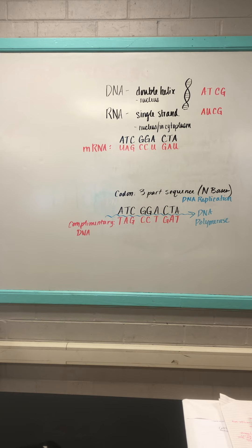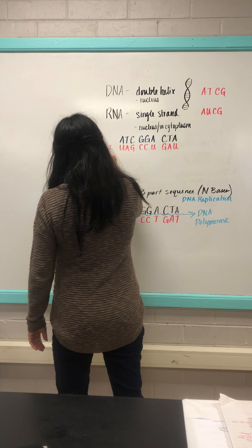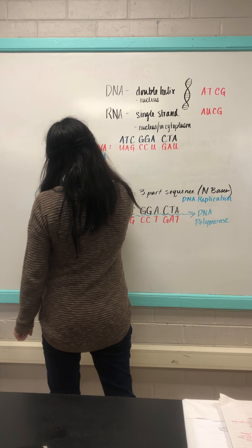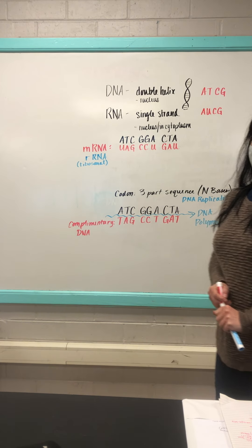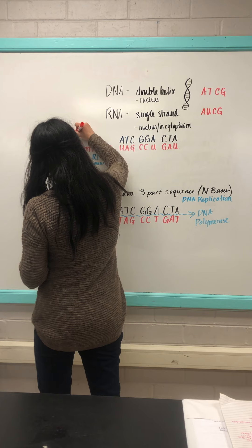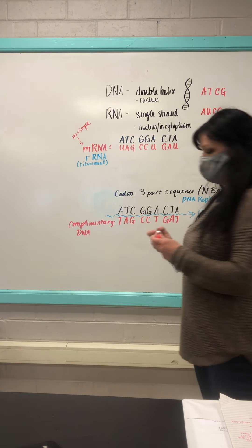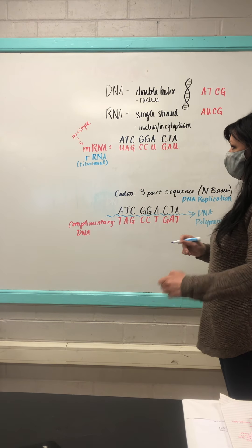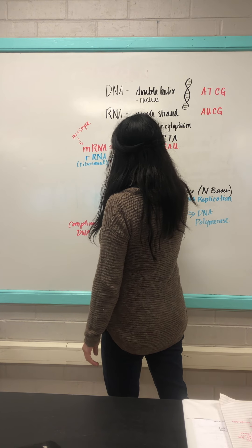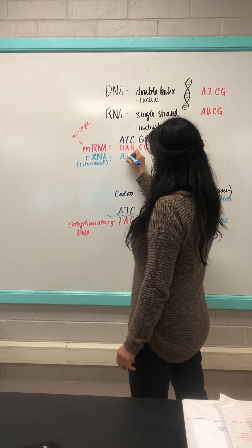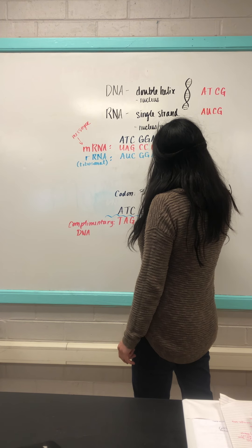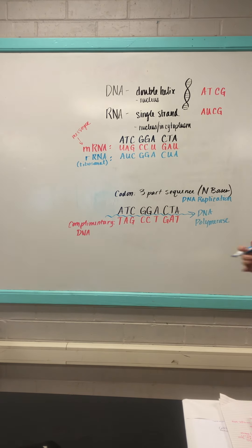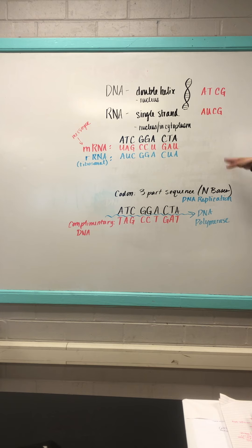The next RNA to come in is rRNA, or ribosomal RNA. Remember that ribosomes make proteins. The ribosomal RNA uses the mRNA code to build the proteins. Working through the rRNA strand from the mRNA: U bonds with A, A bonds with U, G bonds with C, G bonds with C, U bonds with A, G bonds with C, A bonds with U, and U bonds with A.